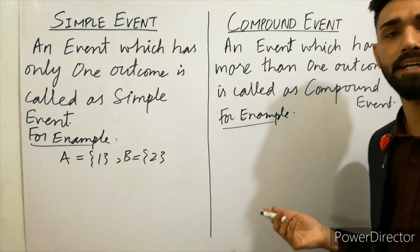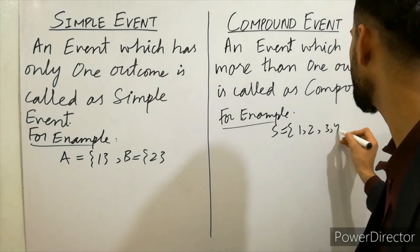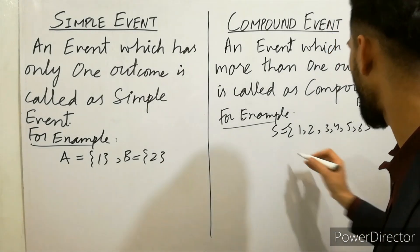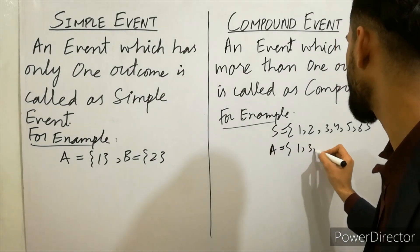You can write a sample space equal to 1, 2, 3, 4, 5, 6. You can write here A is equal to 1, 3, 4. You can write A for example.